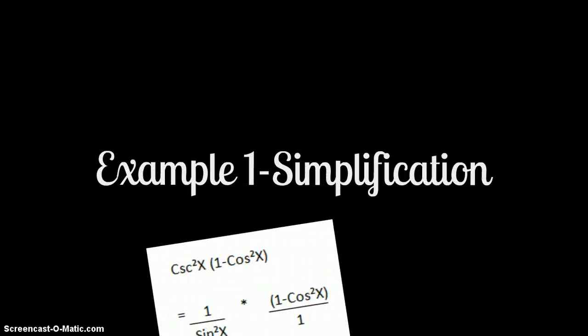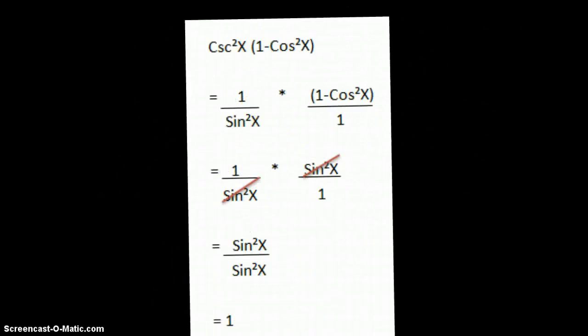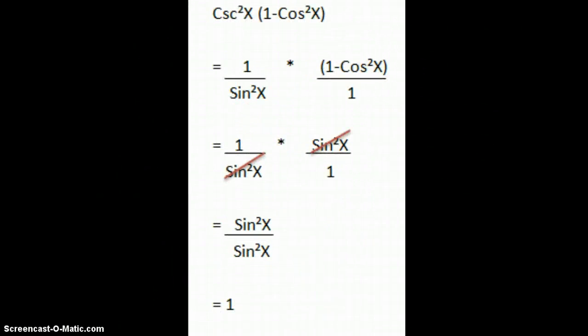Okay, so we're going to go through some examples. This first one is a simplifying problem. Cosecant squared x times 1 minus cosine squared x. So the first thing you want to do here is break it into pieces. If we look at the first piece, cosecant squared x, you can see that it's a reciprocal identity.